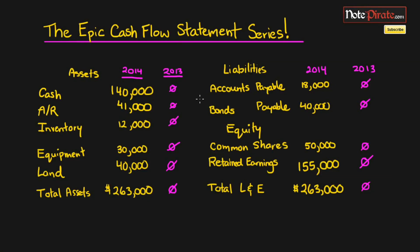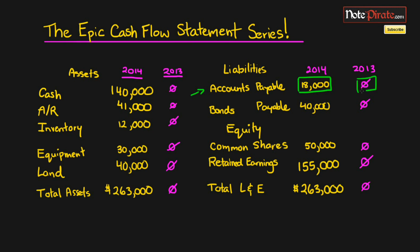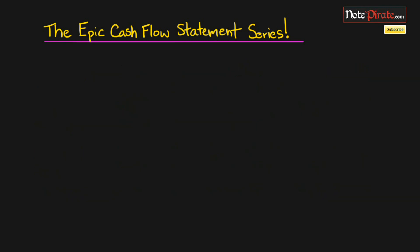Next up on the docket is to adjust for accounts payable. We already adjusted for our current assets — accounts receivable and inventory — and we don't have to adjust for cash because that will be the last item on our cash flow statement. The other assets shown are long-term in nature, so they belong in the investing section, not operating. Accounts payable increased by $18,000 from 2013 to 2014, so let's factor that into our cash flow statement.